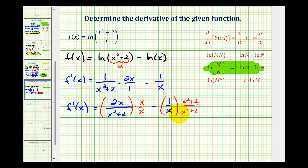So now that we have a common denominator we can combine the numerators. We would have f prime of x equals our common denominator is x times the quantity x squared plus two. The numerator would be two x squared.